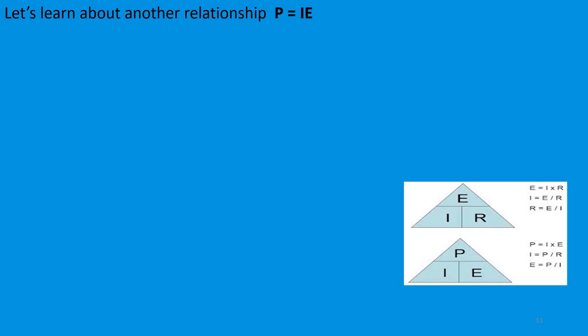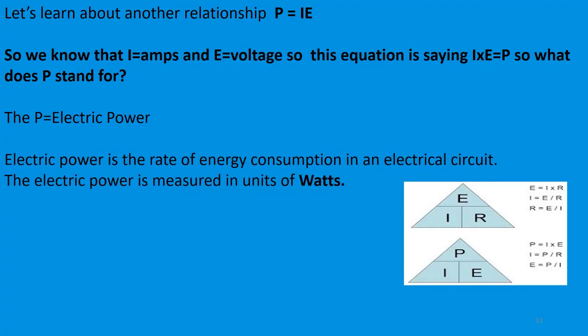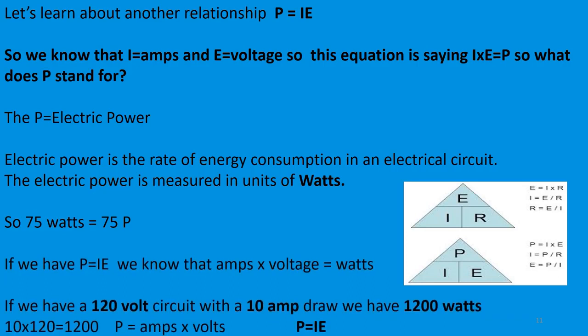Let's learn about another relationship: P equals IE — an easy way to remember it is 'PI.' We know I equals amps and E equals voltage, so this equation says amps multiplied by voltage equals P. P is electric power — the rate of energy consumption in an electrical circuit, measured in watts. So if P equals IE, then amps multiplied by voltage equals watts. A 120-volt circuit with a 10-amp draw gives us 1200 watts: 10 multiplied by 120 equals 1200.